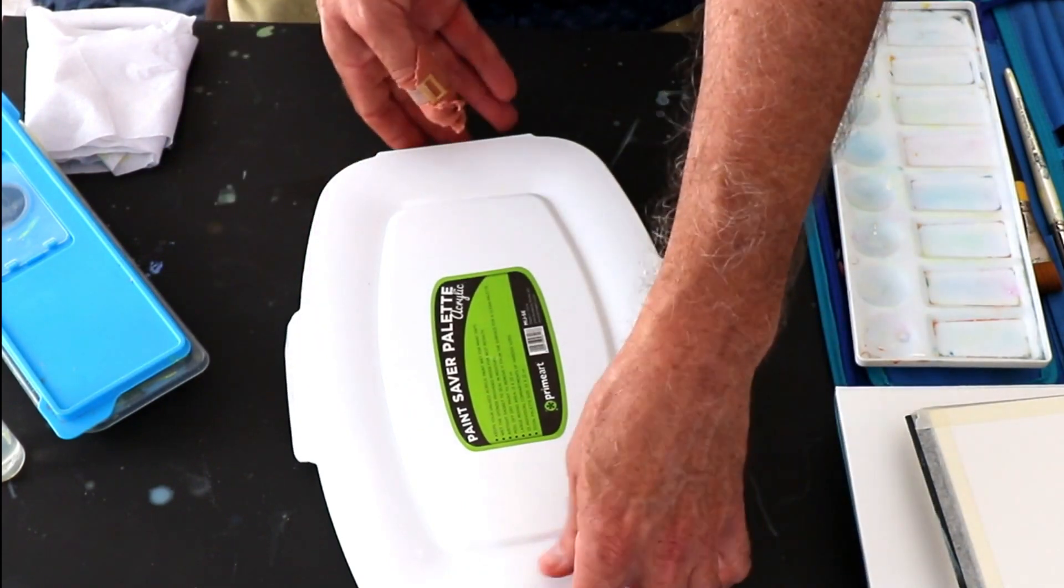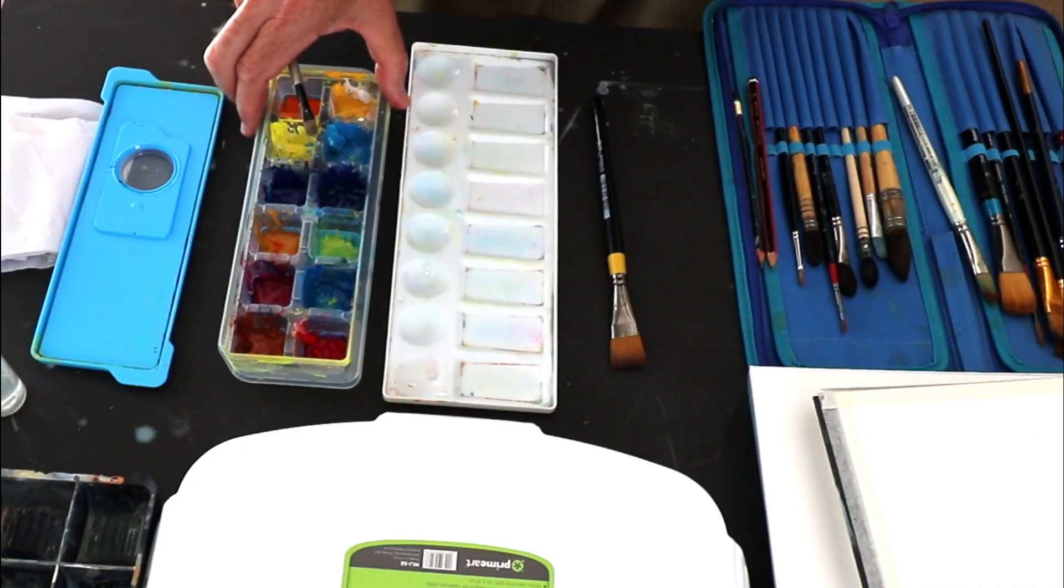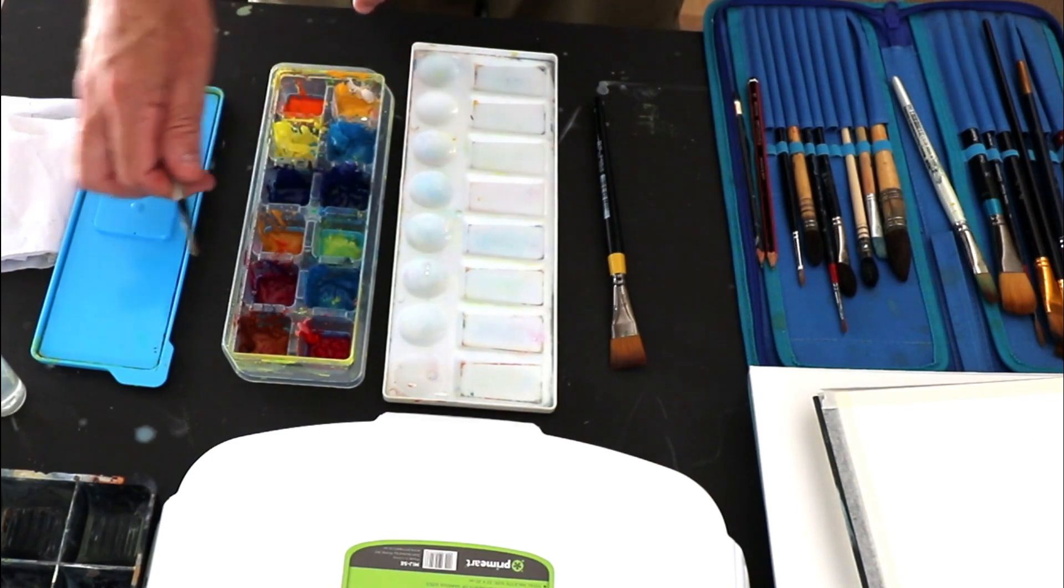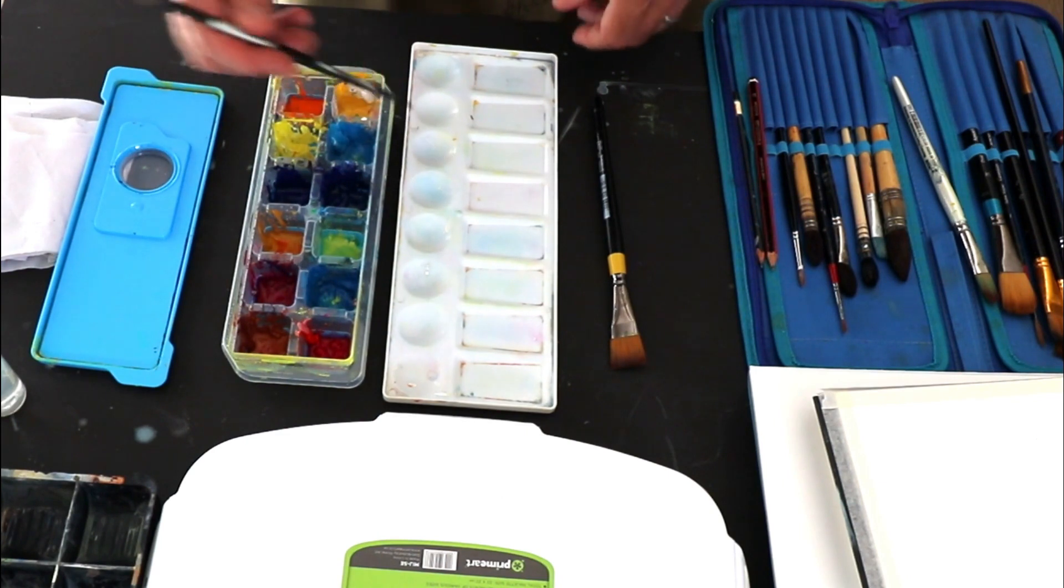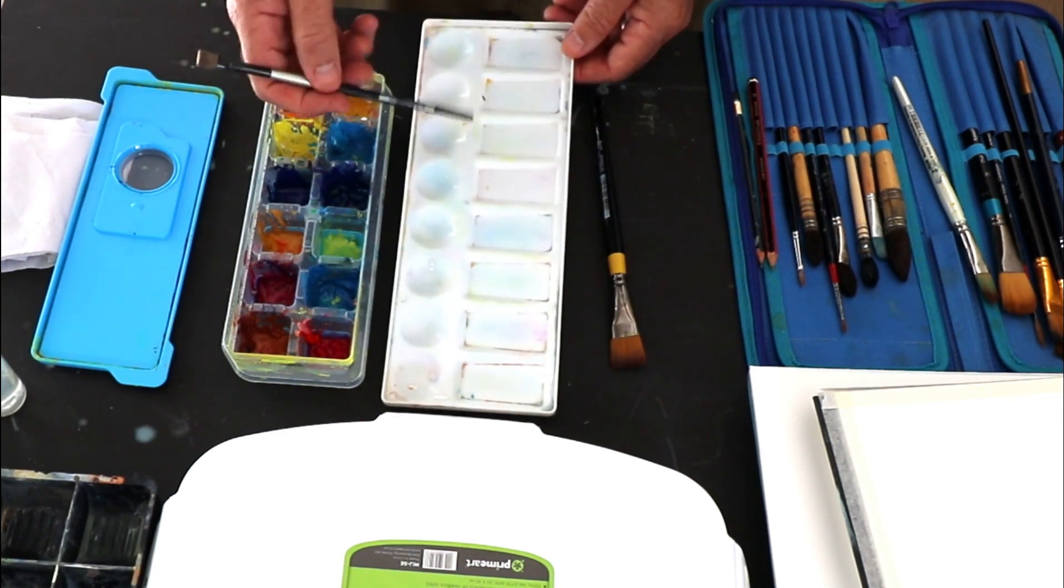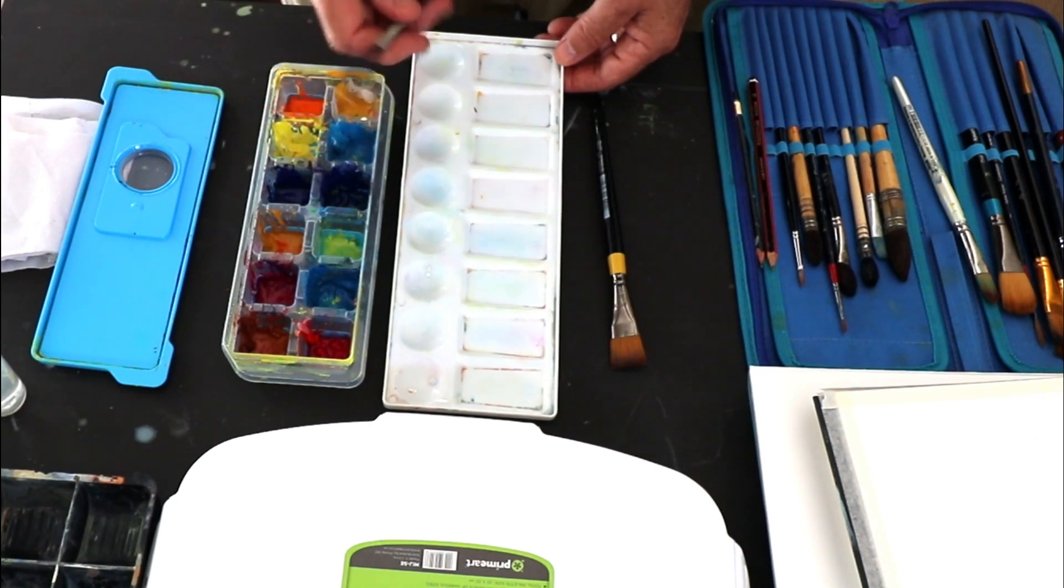Clamp it down and it forms a good airtight seal. Now if you are going to be using this type of palette, you're going to need somewhere to mix your paints and these inexpensive mixing trays really come in very handy.